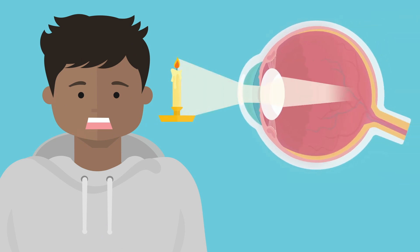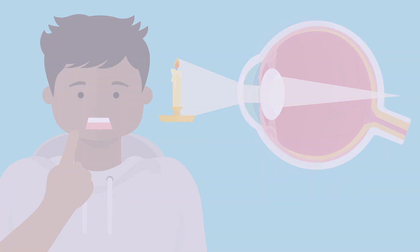Now, you might be wondering what causes the light rays to converge to a point behind the retina in the first place. There are different causes for this condition.